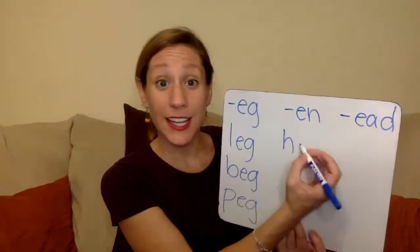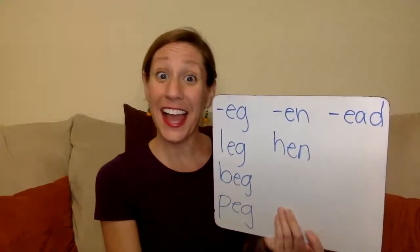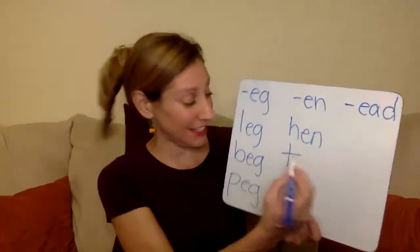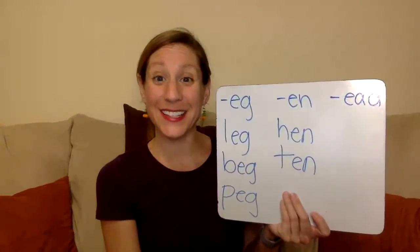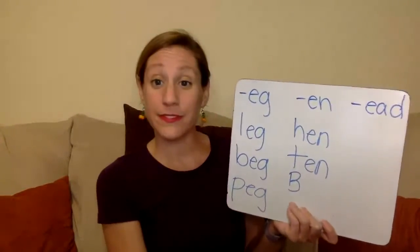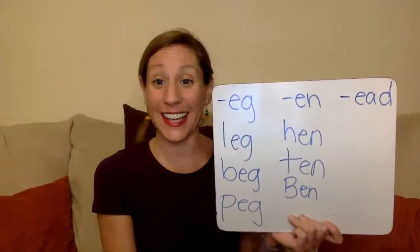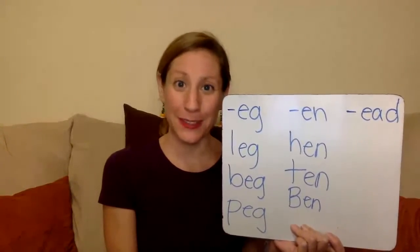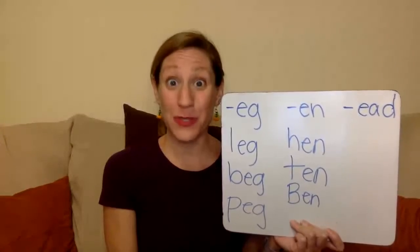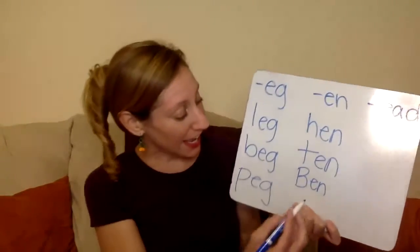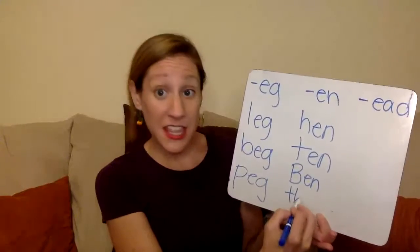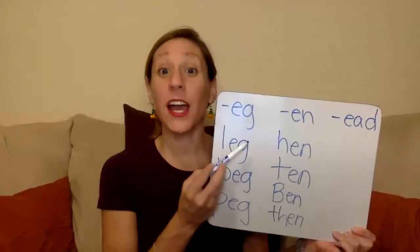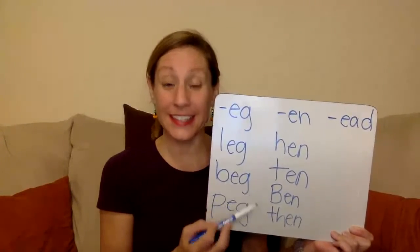How about the en family? If we put T at the beginning, we get ten. If I put B at the beginning, I get Ben. I made it a capital B because it's a name, and we always capitalize our names, our proper nouns. And if I put Z at the beginning, I get then. Hen, ten, Ben, then.